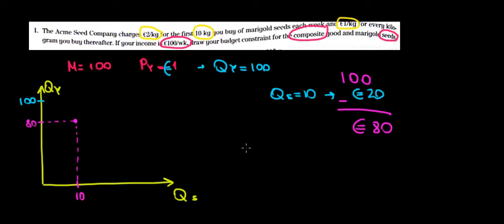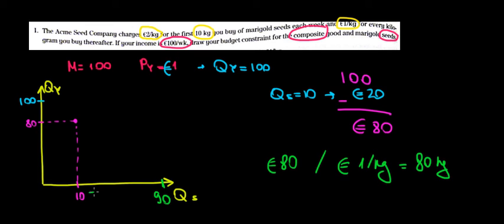Now the price of seeds is going to be just 1 euro because we already bought 10 kilos. So 80 euros left divided by 1 euro per kilo, then we would be able to buy 80 kilos of seeds. So 80 more, meaning that 10 plus 80 more is going to give us a maximum quantity of 90. So the difference after that is this 80 that we can still buy.